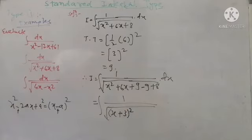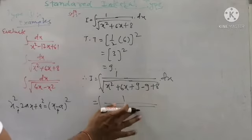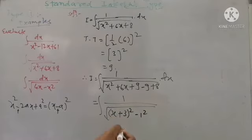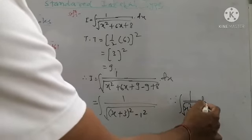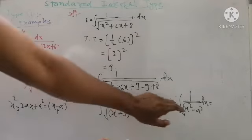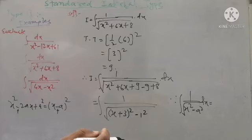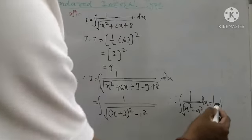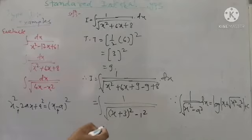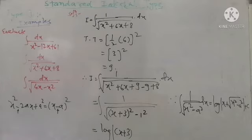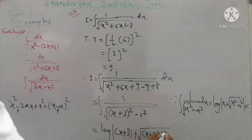Simplifying: -9 + 8 = -1, so the integral becomes 1 upon root of (x + 3)² - 1². This is of the form 1 upon root of (x² - a²), whose integration is log|x + √(x² - a²)| + c. Here x is replaced by (x + 3) and a = 1, so the answer is log|(x + 3) + √((x + 3)² - 1)| + c.